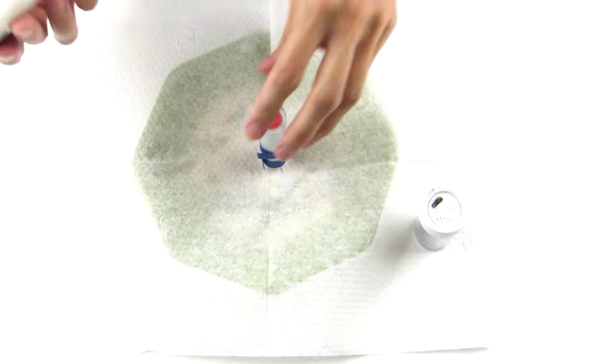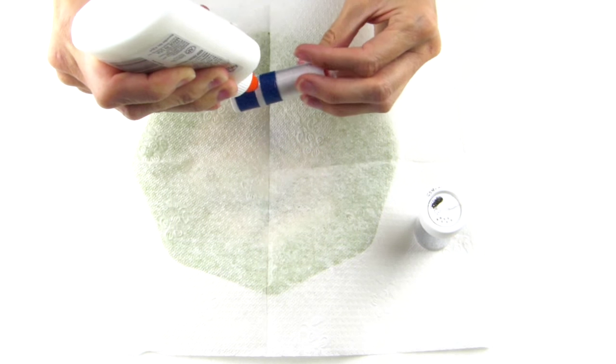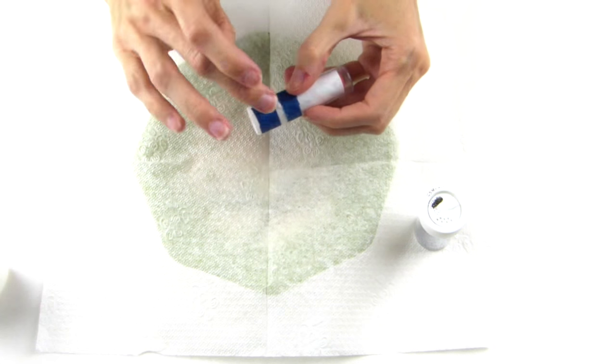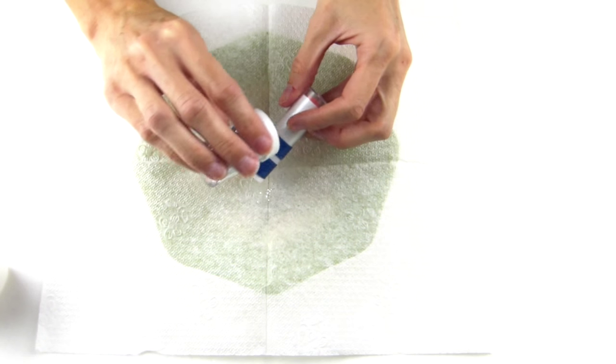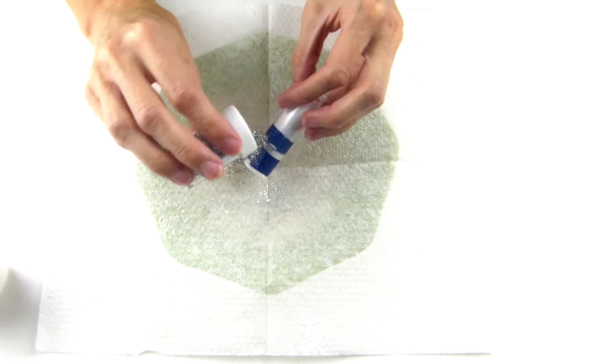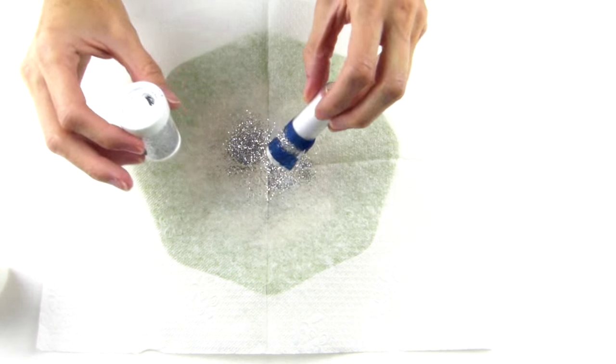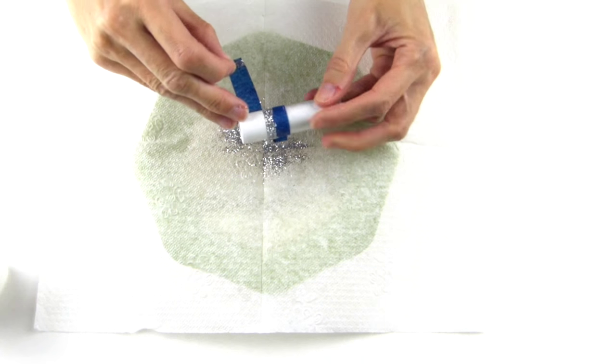Now that it's taped off, you'll just want to grab some glue, glue all the way around, then you will grab some glitter and sprinkle that on. Once that has dried, just carefully remove the painters tape.